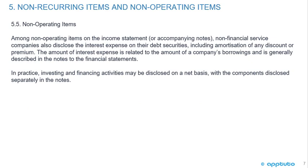Among non-operating items on the income statement or accompanying notes, non-financial services companies also disclose the interest expense on their debt securities, including amortization of any discount or premium. The amount of interest expense is related to the company's borrowings and is generally described in the notes. In practice, investing and financing activities may be disclosed on a net basis, with components disclosed separately in the notes. That's the last slide for this LOS. Thank you.